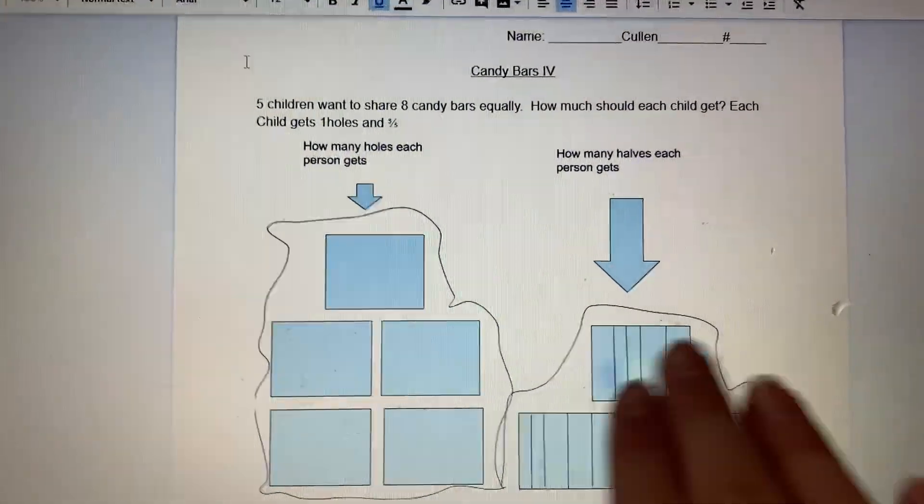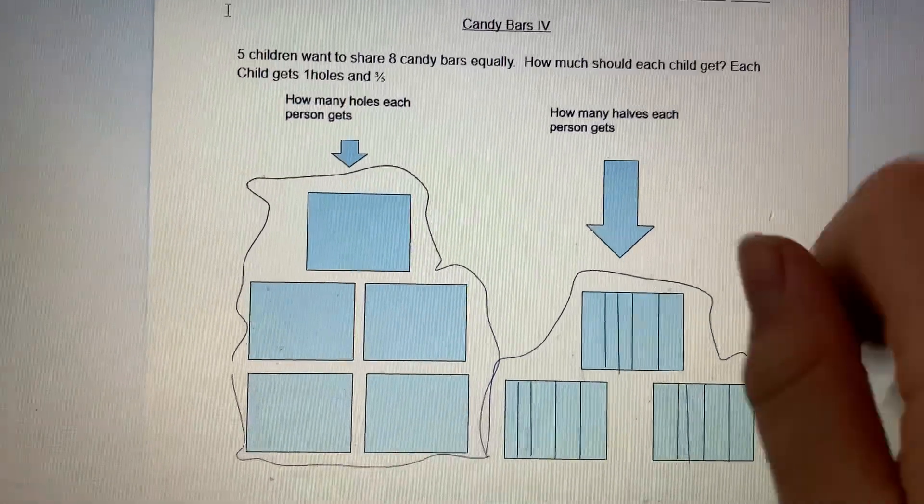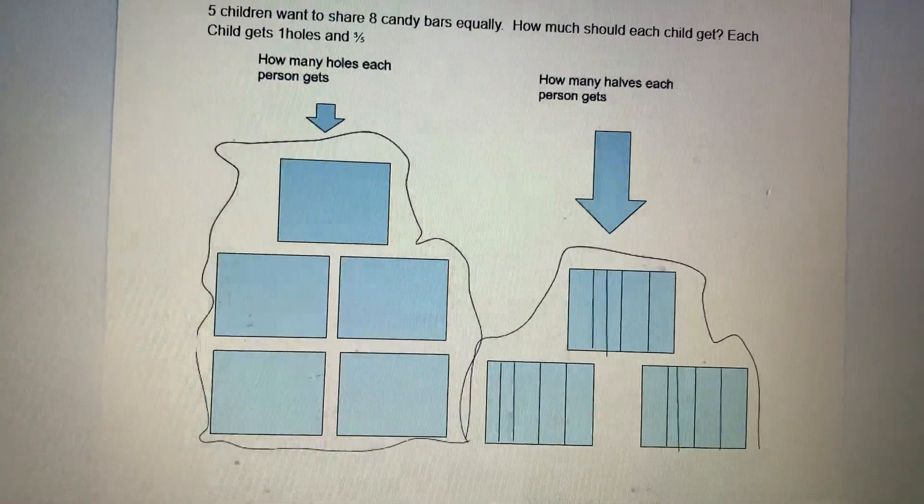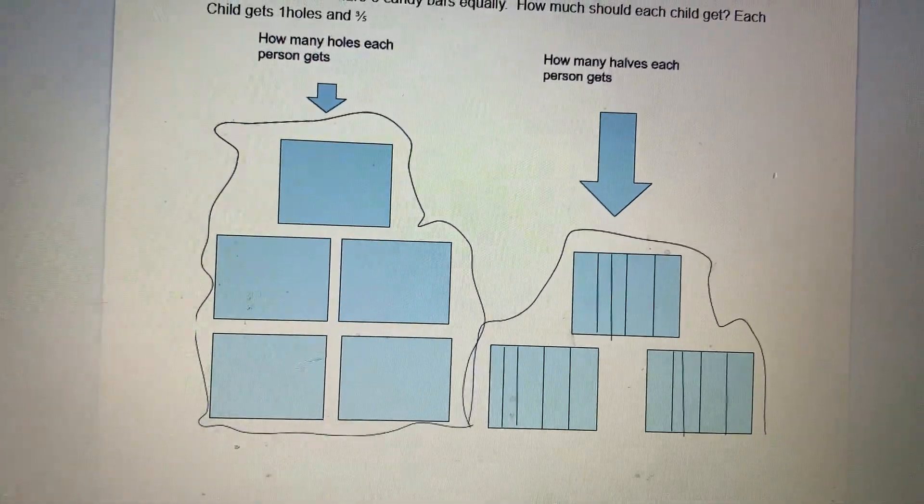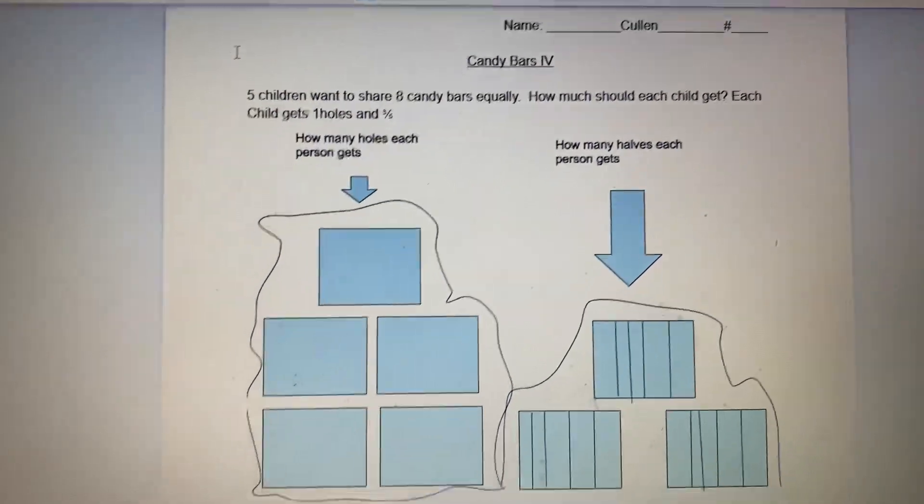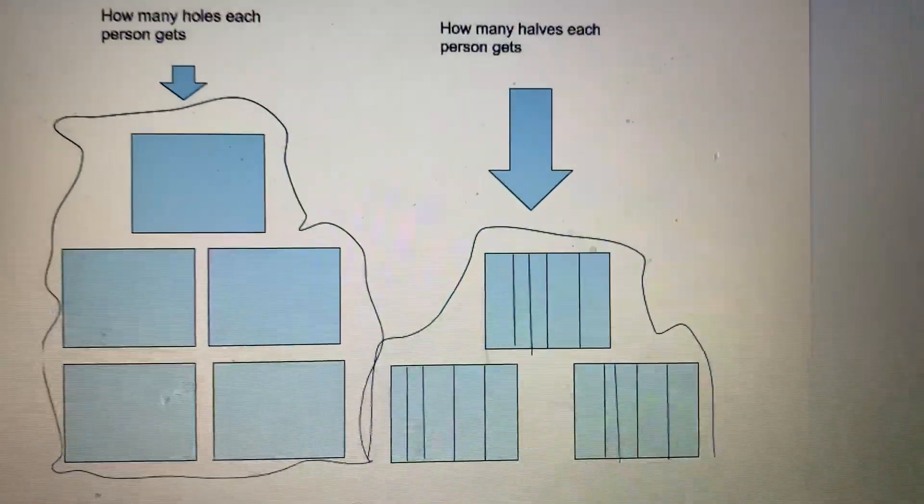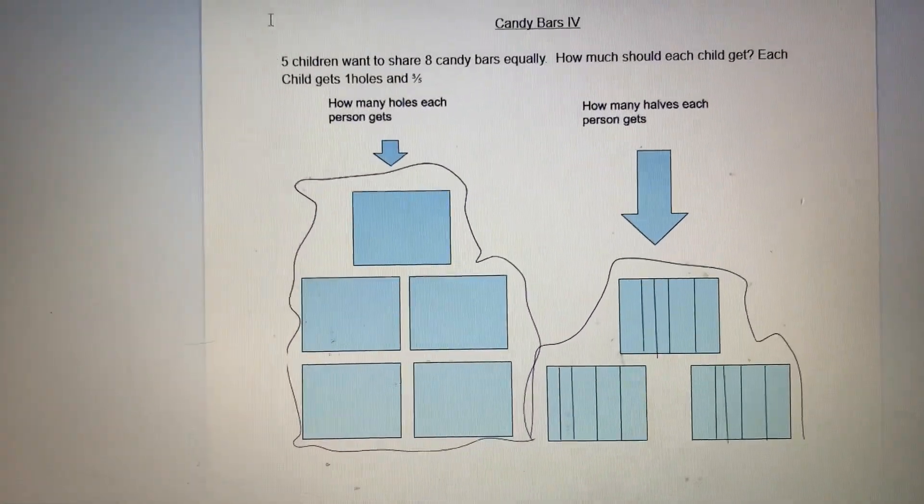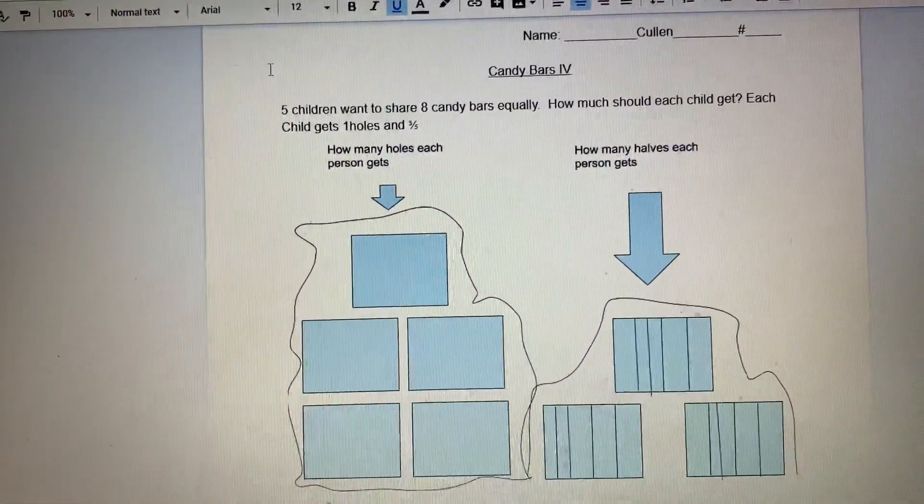Very good. So when you cut each piece into a fifth, how many total pieces did you get all together? My total pieces of what? You said you cut those three pieces into fifths each, right? Yeah. So that made you how many pieces? Fifteen. Fifteen. Great. And then you did equal shares of the fifteen? Yes.